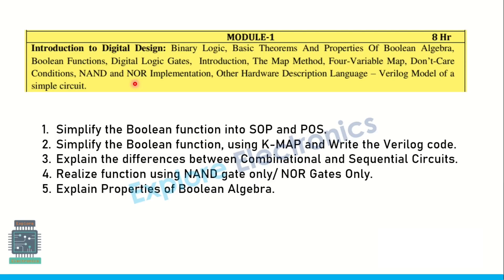Explain the properties of Boolean algebra — you may get a general question like this, or be asked specifically to explain a property like De Morgan's theorem. These are the five very important questions from module 1.